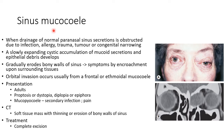Now let us discuss about sinus mucocele. It occurs when drainage of normal paranasal sinus secretions is obstructed due to infection, allergy, trauma, tumour, or congenital narrowing. This causes a slowly expanding cystic accumulation of mucoid secretions and epithelial debris, which gradually erodes the bony walls of the sinus, leading to symptoms by encroachment upon surrounding tissues.